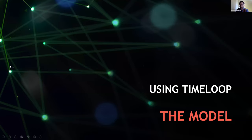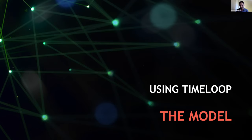With those motivating remarks out of the way, let's dive into how to use the infrastructure — how to use Timeloop. In these slides we'll be using Accelergy in a transparent way and won't talk too much about it. Nelly will cover Accelergy in detail later. For now, let's focus on how to use the Timeloop model, ignoring the mapper. To invoke the model, you need to give it a problem, an architecture, and a mapping.